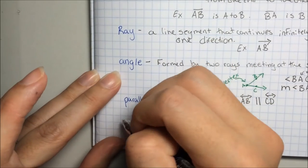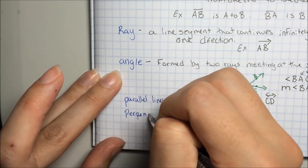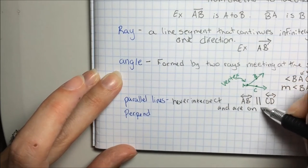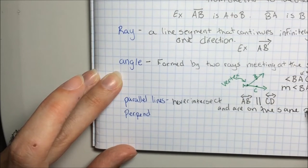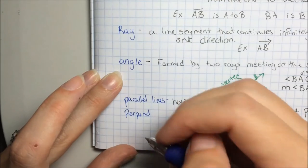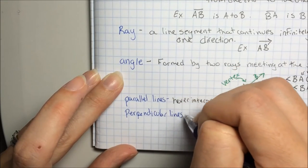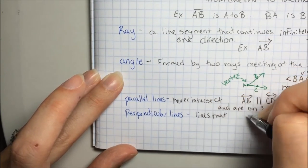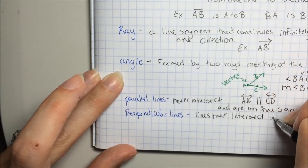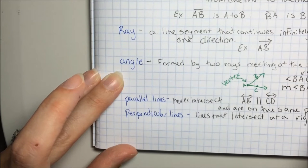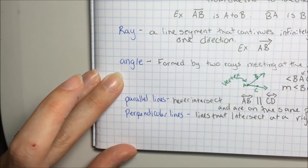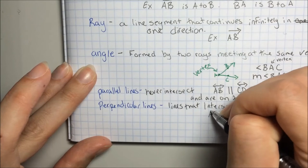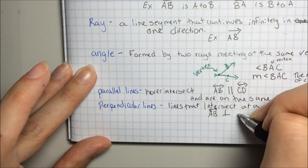Next, when two lines are perpendicular... I'm going to go back to parallel lines. They never intersect and are on the same plane. Perpendicular lines are lines that intersect at a right angle. And the notation for perpendicular lines would look like AB is perpendicular to CD.